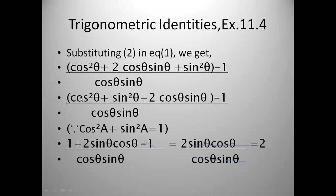The plus 1 and minus 1 cancel each other. What remains is 2 cos θ sin θ divided by cos θ sin θ. Since cos θ sin θ in the numerator and denominator are the same, they cancel. The final answer is 2.